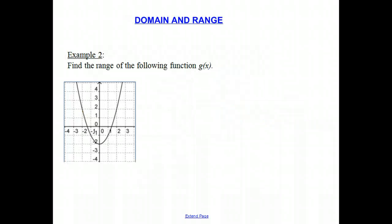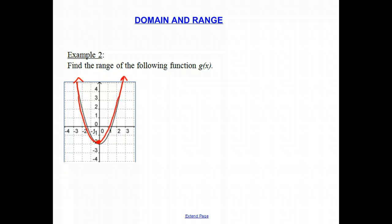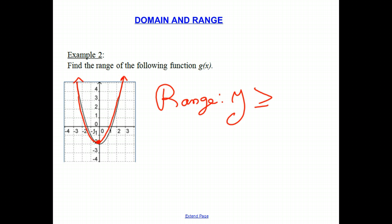Let's do one more problem with range. Here's a function — you might recognize it as a quadratic. The graph goes forever in the positive y direction, but it intersects the y-axis at its lowest point of negative 2. Every y value is valid except it cannot be less than negative 2, because there are no y values less than negative 2. Therefore, the range of this function is all y values greater than or equal to negative 2. Since it intersects at negative 2, that value is valid, and every y value above negative 2 is also valid.